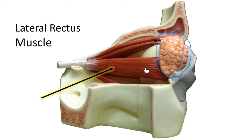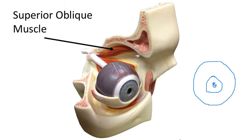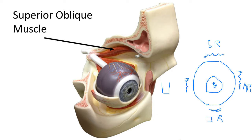There are two additional special muscles: the superior oblique and inferior oblique. Looking at the eye from the front, the superior oblique is in the upper medial corner. Its tendon travels through a ring-like structure called the trochlea, meaning 'pulley,' then attaches to the upper outer surface of the eye. When the superior oblique contracts, the eyeball moves down and out.